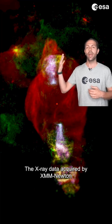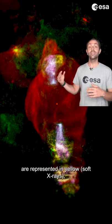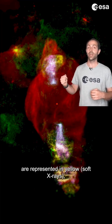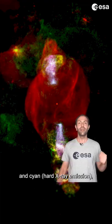The X-ray data acquired by XMM Newton are represented in yellow by soft X-rays, magenta, medium X-ray energy, and cyan, hard X-ray emissions.